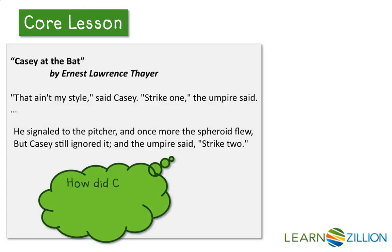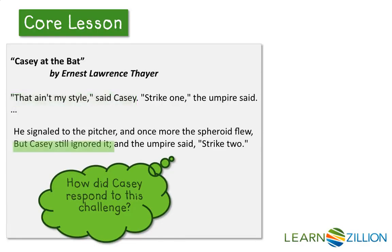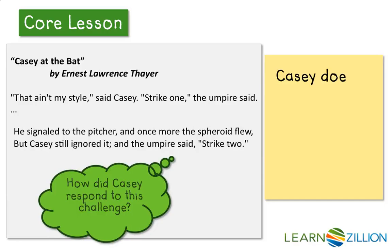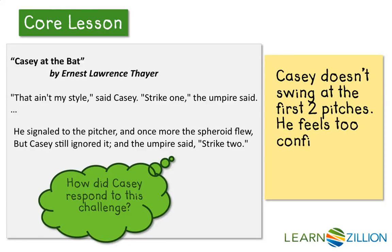So let's think — how did Casey respond to this challenge? Well, in the middle of the poem, when he gets the first pitch, he says, 'That ain't my style.' And then he gets a strike. But then he ignores the next pitch and gets another strike. I would summarize how he responded to this challenge by noting that Casey doesn't swing at the first two pitches. He feels much too confident about himself.